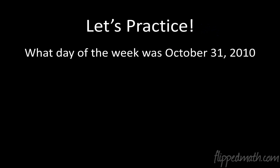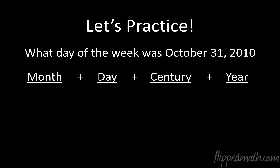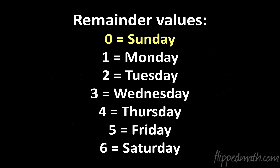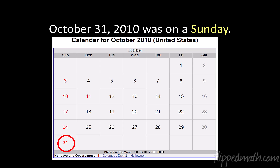One more. What day of the week was October 31st, 2010? Month: October is zero. Day: 31. Century and year: 4. Add all those together and you get 35. Divide 35 by 7 — the remainder is nothing, zero. A remainder of zero is a Sunday. So Halloween 2010 was on a Sunday.